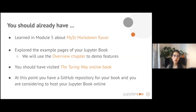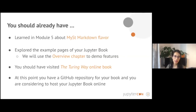You should have already seen what MyST Markdown flavor is, which provides many more dynamic features into Markdown in JupyterBook. You've explored some examples of your JupyterBook using Turing Way chapters. For this particular module we will be using only the overview chapter. You should have visited the Turing Way online — if you haven't, please take five minutes to do so, as it will be extremely useful to see how the things we introduce in this module are helpful.